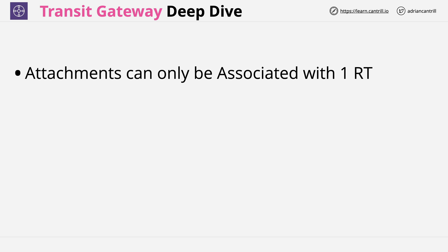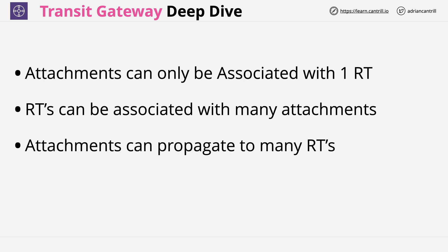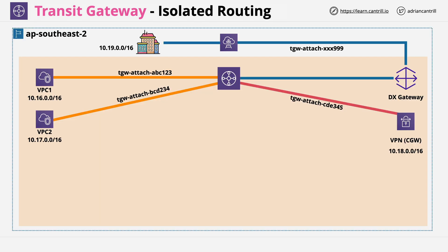Attachments can only be associated with one route table, and it's this route table which controls where traffic goes when it leaves that attachment. However, a route table can be associated with many different attachments. Attachments can propagate — pass on the routes they know about — to one or more route tables, even route tables which they're not associated with. These two mechanics are what allows us to create advanced isolated routing architectures, including multiple hub-and-spoke networks inside a single Transit Gateway.